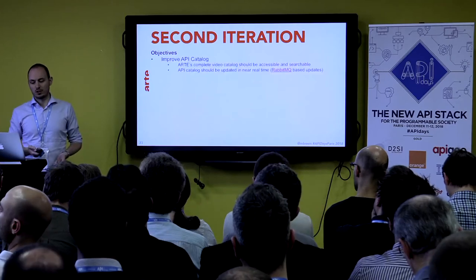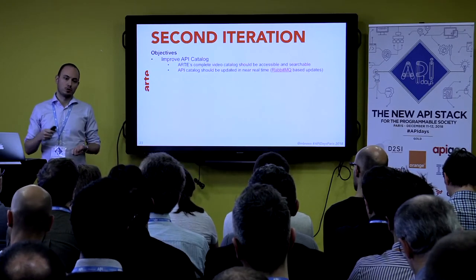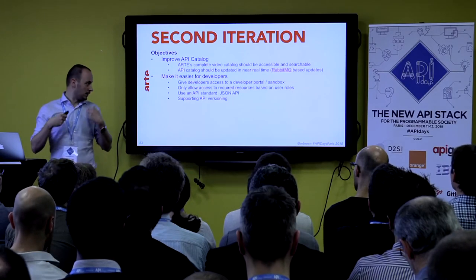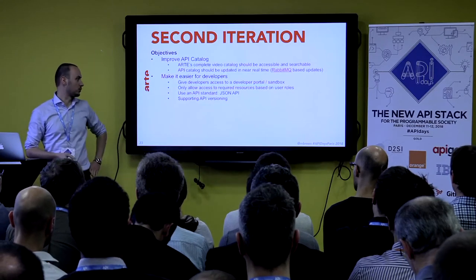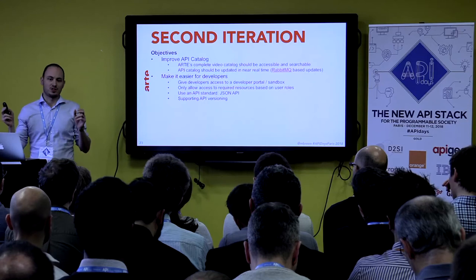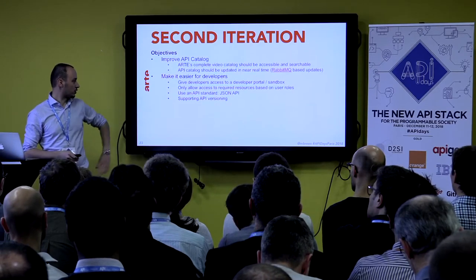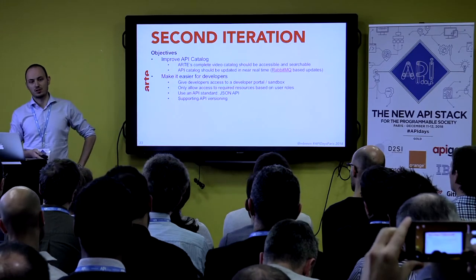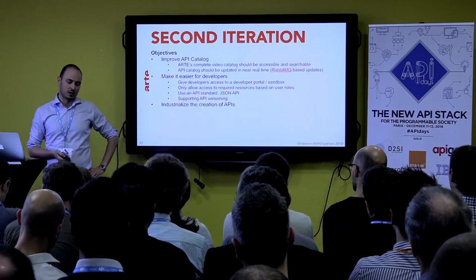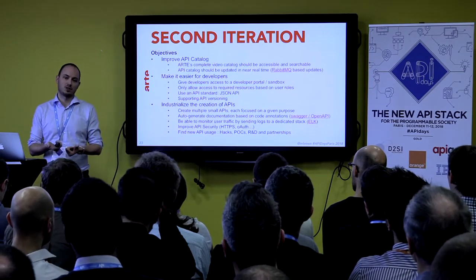The objective for our second version was to improve our catalog — to have our complete video catalog in the API — and to improve the time between an editor's update and when it went live. We wanted to make it even easier for developers via access to a developer portal. We tried to use a standard JSON API. At the time, JSON API was still in beta, so we weren't fully JSON API 1.0 compliant. We also wanted to support versioning so that we could make breaking changes without destroying existing apps, and to industrialize the creation of new smaller APIs by auto-generating documentation based on code annotations.